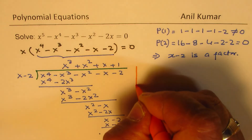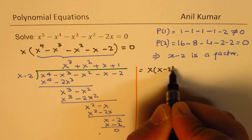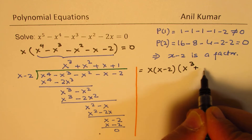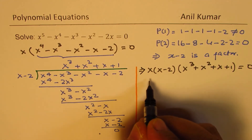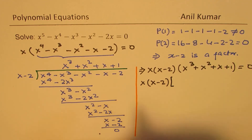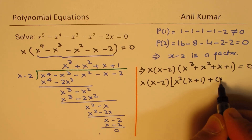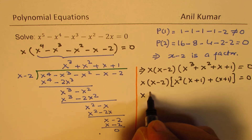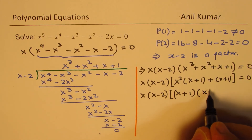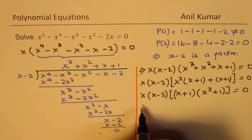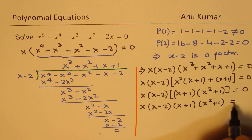So we get the other factor as well. Now we can write the equation as x times x minus 2 times x cube plus x square plus x plus 1 equals to 0. Now here we can do group factoring. Taking x square common gives x plus 1, and we do have an x plus 1 factor. So we can write this as x times x minus 2, where x plus 1 is a common factor, and we get x square plus 1 as another factor, equals to 0. So the polynomial is x times x minus 2 times x plus 1 times x square plus 1 equals to 0.